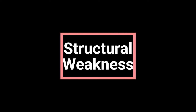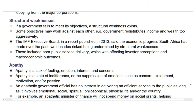Next is structural weaknesses. If a government fails to meet its objectives, a structural weakness exists. Some objectives may work against each other, e.g. if the government redistributes income and wealth too aggressively. The IMF Executive Board, in a report published in 2013, said the economic progress South Africa had made over the past two decades risked being undermined by structural weaknesses, including poor public service delivery, which was affecting investor perceptions and macroeconomic outcomes.